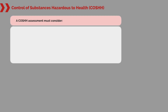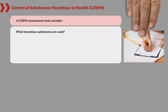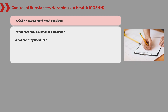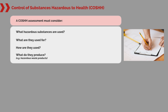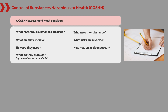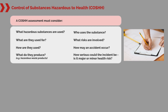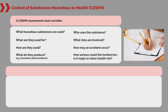A COSHH assessment must consider: What hazardous substances are used? What are they used for? How are they used? What do they produce, for example hazardous waste products? Who uses the substance? What risks are involved? How may an incident occur? How serious could the incident be — is it a major or minor health risk?